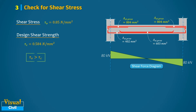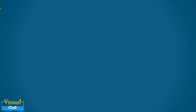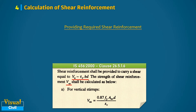Consequently, according to Clause 40.4 of IS 456, if tau_v is more than tau_c from Table 19, shear reinforcement shall be provided. According to Clause 26.5.1.6, the shear reinforcement should be designed to carry a shear V_us equal to V_u minus tau_c times b times d. After substituting all necessary values, V_us equals 24,929 N.